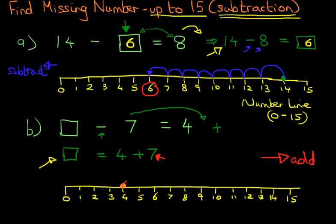Count with me. We've got 1, 2, 3, 4, 5, 6, and 7. Now what number have we landed on? We have landed on number 11. That is our answer. 11 equals 4 plus 7. Now write this in the original question: 11 minus 7 equals 4.